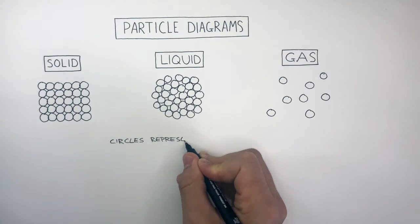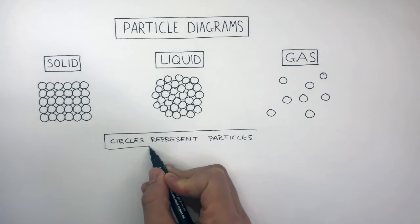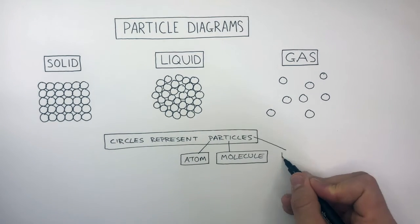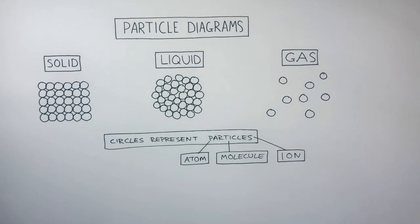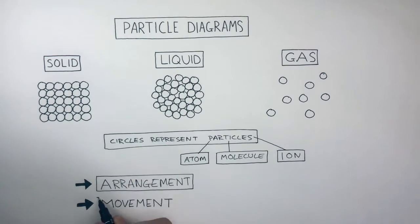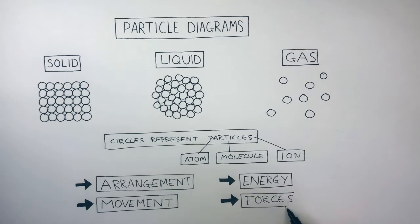The circles represent particles. Particles are just really small things such as atoms, molecules, or ions. Even though particle diagrams are very simple, we can use them to understand the arrangement of particles, the movement of particles, the energy that a substance stores, and the forces between the particles.